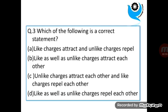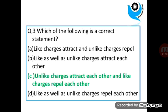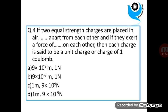Question 3. Which of the following is a correct statement? Answer is C. Question 4. If two equal strength of charges are placed in air, dash apart from each other and if they exert a force of dash on each other, then each charge is said to be a unit charge or charge of 1 coulomb.